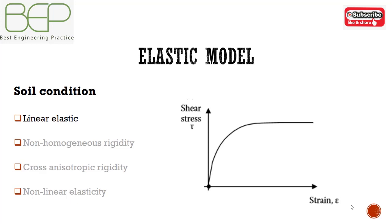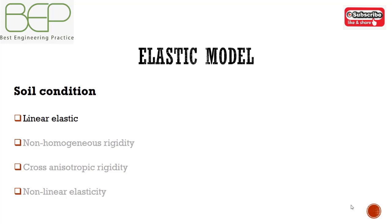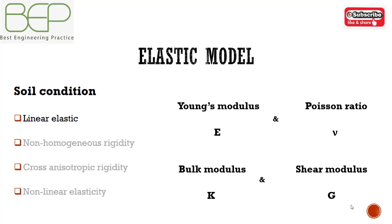An isotropic linear elastic model requires two stiffness parameters: either Young's modulus and Poisson's ratio, or bulk modulus and shear modulus. Most computer codes use E and nu under undrained conditions.